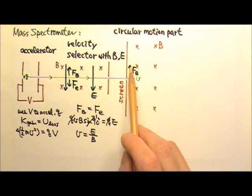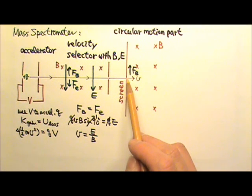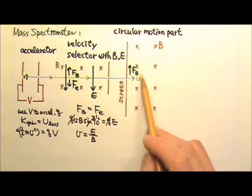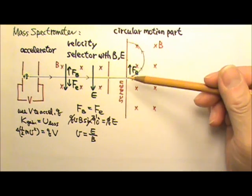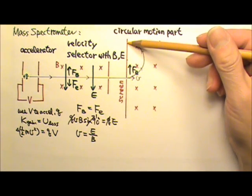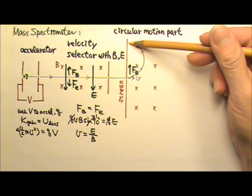Magnetic force going up means this positive q is going to curve up that way for circular motion. After exactly half a circle, the charge hits the screen over here.